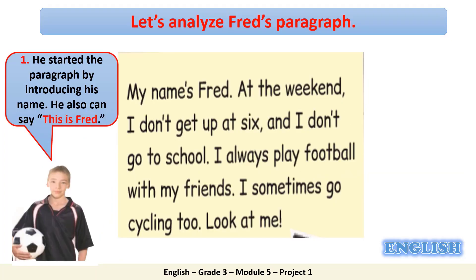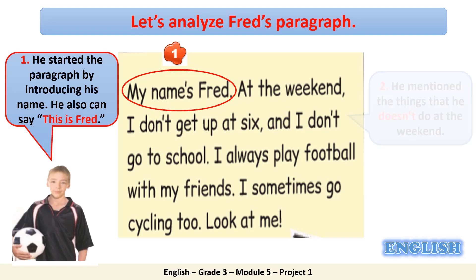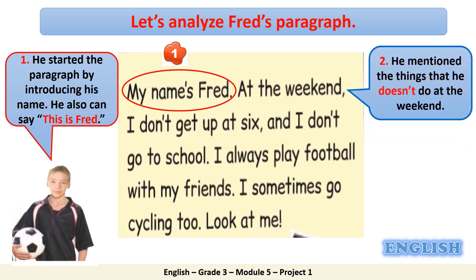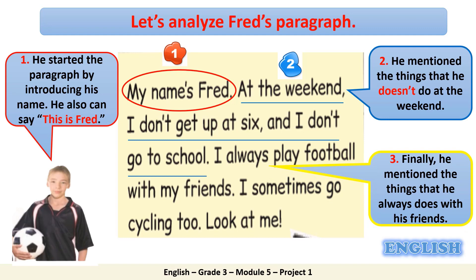Now let's analyze Fred's paragraph together. He started by introducing his name — he wrote: My name's Fred. He also can say: This is Fred. Then he mentioned the things he doesn't do at the weekend: At the weekend, I don't get up at 6 and I don't go to school. Finally, he mentioned what he always does: I always play football with my friends. I sometimes go cycling too.